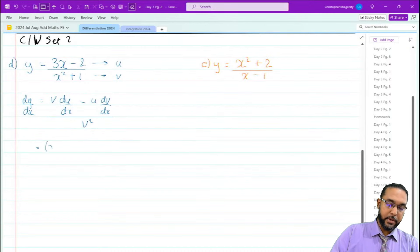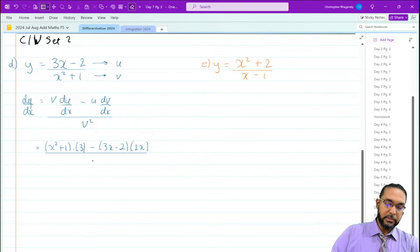So v is x² + 1, du/dx is 3, minus 3x - 2, then multiply by dv/dx which is 2x. Then that's over v squared, which is x² + 1.